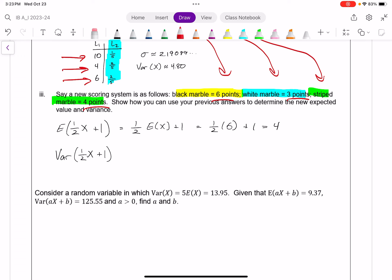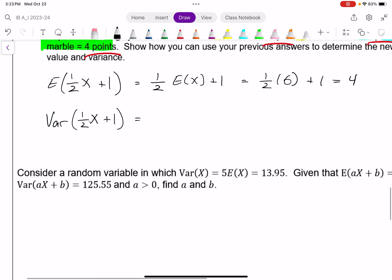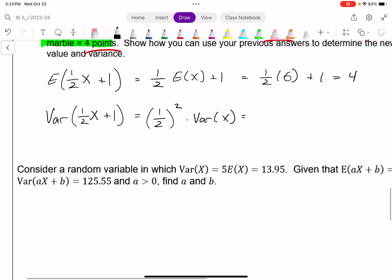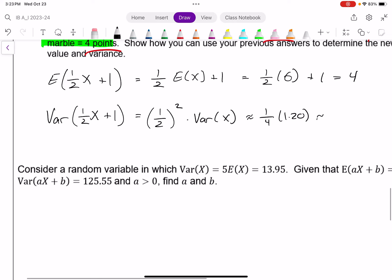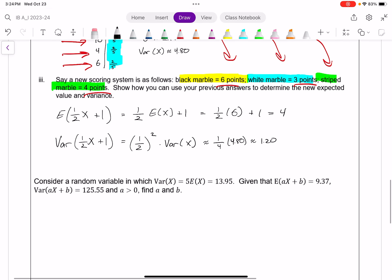For variance, the plus 1 makes no difference. The 1 half does. So the new variance will be the same as the old variance, but that 1 half is going to be squared. So it's 1 half squared times the old variance. Or in this case, 1 quarter times 4.80, which leads us to approximately 1.20. And again, you could quickly confirm with your GDC, but we do want to understand how these transformations affect the expected value and the variance, which are quite quick.